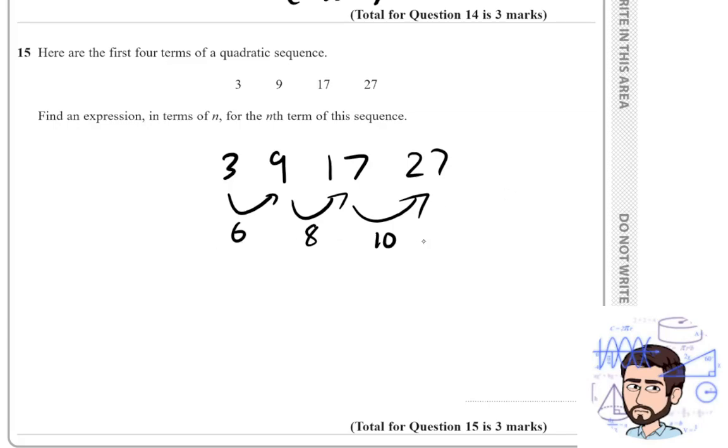Let's start by writing out the sequence again. I'm going to work out how much it goes up each time. So it goes up by 6, then by 8, and then by 10. Now obviously these numbers are not going to be the same because we call this the first difference. If that was the same, it would be a linear sequence, but this is a quadratic sequence.